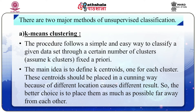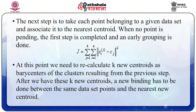K-means is one of the simplest unsupervised learning algorithms that solves the well-known clustering problem. The procedure follows a simple and easy way to classify a given data set through a certain number of clusters — assume k clusters fixed a priori. The main idea is to define k centroids, one for each cluster. These centroids should be placed in a cunning way because different locations cause different results, so the better choice is to place them as far as possible from each other. The next step is to associate each data point to the nearest centroid. When no point is pending, the first step is complete and an early grouping is done.